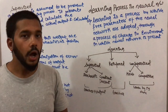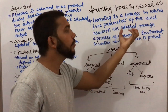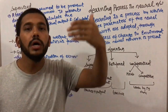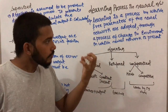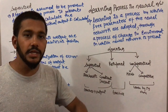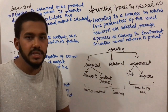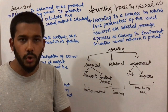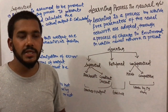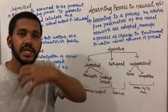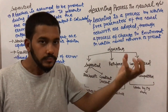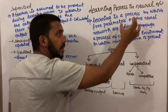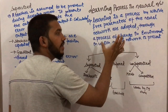Free parameters are adopted through a process of change in the environment in which the neural network is present. Just like learning to play football — we go to a football club or coaching class. My daily schedule changes: instead of just coming from college and studying, I now go for football coaching after college. By changing my environment, I can adopt and learn new things.